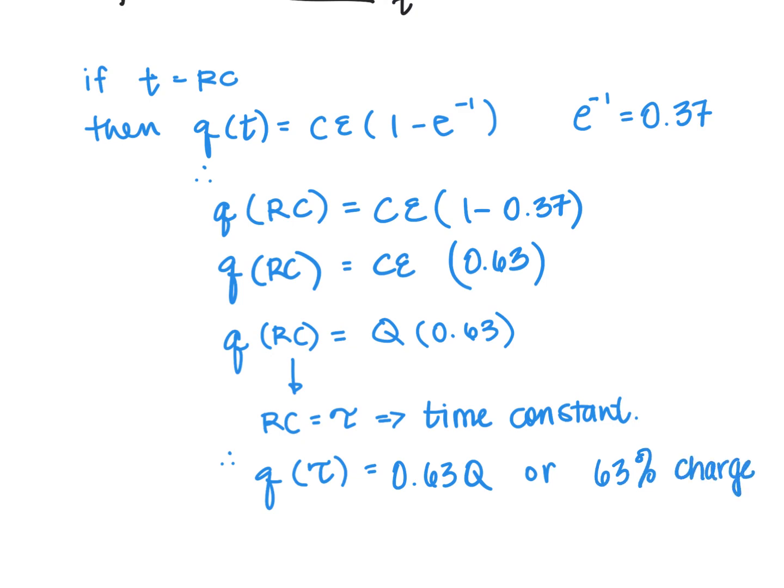Now this is useful because if you have a graph of charge versus time and you can determine by examining the graph what the maximum charge would be, you could then determine the time constant. And if you have the time constant, it will be equal to R times C, the resistance times the capacitance, and knowing that value is very helpful if you're looking for the capacitance or the resistance of your circuit.